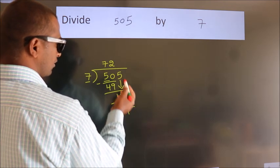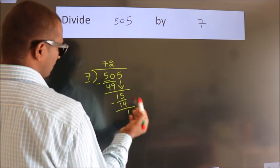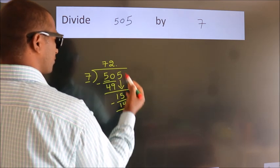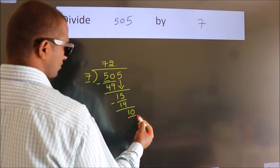After this, no more numbers to bring it down. So what we do is we put a dot and take 0. So 10.